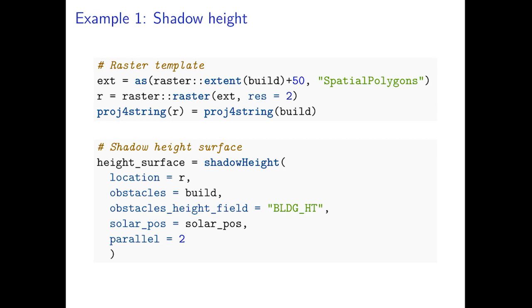And then we run function shadowHeight again, this time replacing the location argument with the raster template and also using a parallel processing option with two cores to make the calculation faster.